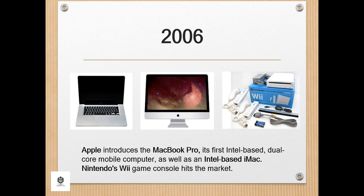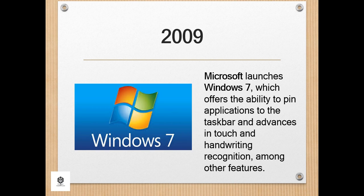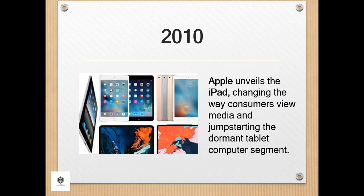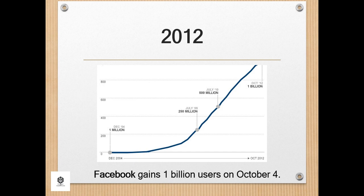In 2006, Apple introduced the MacBook Pro, its first Intel-based dual-core mobile computer, as well as an Intel-based iMac. Nintendo's Wii game console also hit the market. During 2007, the iPhone brought many computer functions to the smartphone. In 2009, Microsoft launched Windows 7, which offered the ability to pin applications to the taskbar and advances in touch and handwriting recognition. In 2010, Apple unveiled the iPad, changing the way consumers view media and jump-starting the tablet computer segment. In 2011, Google released the Chromebook, a laptop that runs the Google Chrome OS.